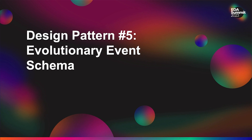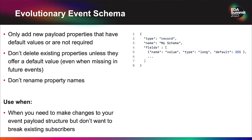Design pattern number five: evolutionary event schema. Our events are going to change over time — we'll add new payload properties with default values that aren't required. We don't want to delete existing properties or rename property names, as that would break subscribers. Otherwise you'll have to version your events, ending up with two different topics for two different versions, which becomes very unwieldy. Use this pattern whenever you need to make changes by ensuring you don't introduce breaking changes.